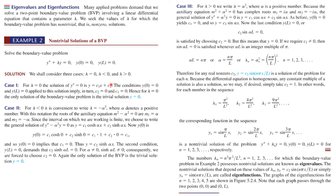We're going to talk about three cases: lambda equals zero, lambda less than zero, and lambda greater than zero. For lambda equal to zero, the equation becomes y double prime equals zero, which gives a linear solution. When we apply the boundary conditions y(0) = 0 and y(L) = 0, we find that both c1 and c2 equal zero. So for lambda equals zero, we only get the trivial solution, y equals zero.